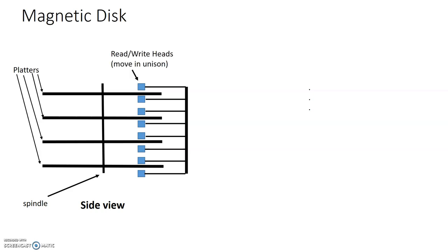Now for each platter, when we're talking about a double-sided disk, and the magnetic disks that we have are double-sided, there's a read-write head on both the top and the bottom of each platter. So if we have four platters, then we'll have eight read-write heads.